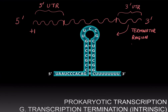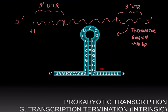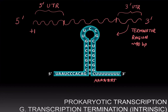The terminator region is about 40 base pairs long and contains a sequence that is rich in C's and G's — also called a CG-rich region — followed by a stretch of uracils. Since C and G pair with each other, a CG-rich region will usually fold up and form a hairpin loop. These U's are base-pairing with A's on the DNA template.